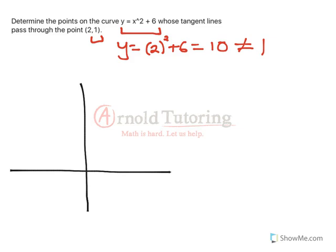So x squared plus 6, I know that that's just the x squared function, but it's 6 up. So I'm just going to do a very basic sketch here, something like that. And then the point (2, 1) is just hanging out here. So (2, 1) is somewhere like right there, I'll say.